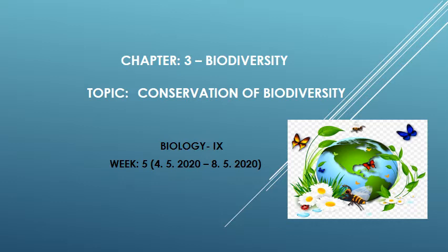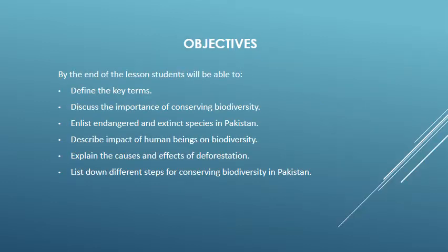Let's start the lesson for week number 5. We are doing Chapter 3: Biodiversity, and the topic for today's lesson is conservation of biodiversity. The objectives are: by the end of the lesson, students will be able to define key terms, discuss the importance of conserving biodiversity, enlist endangered and extinct species in Pakistan, describe the impact of human beings on biodiversity, explain the causes and effects of deforestation, and list steps for conserving biodiversity in Pakistan.